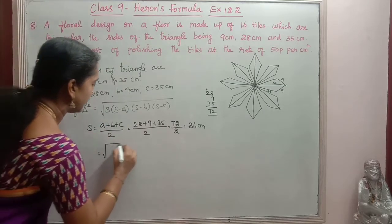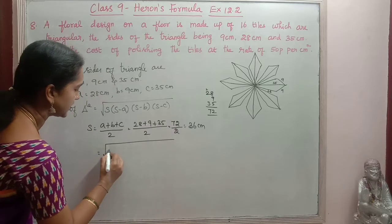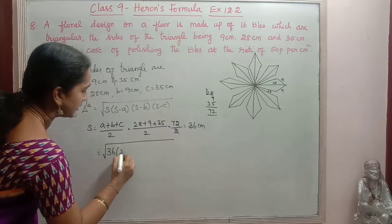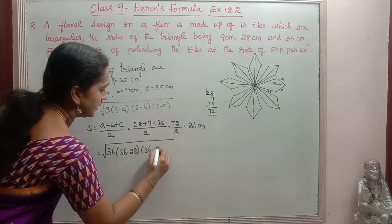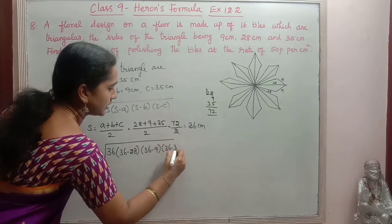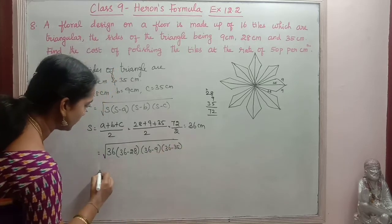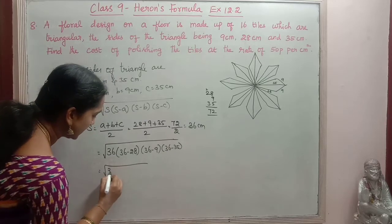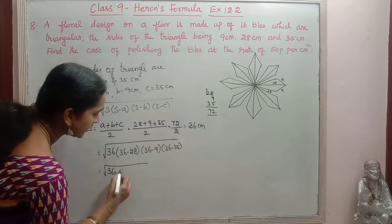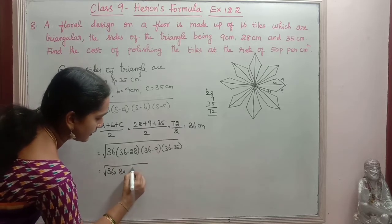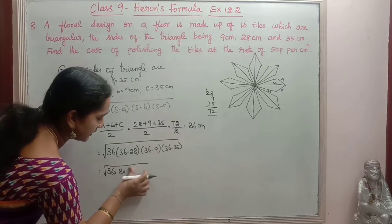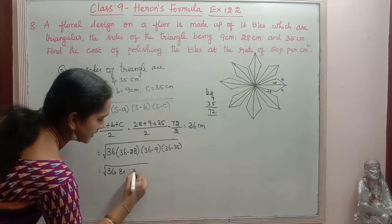So now we will substitute that in the formula. So root of s is 36, 36 minus 28, 36 minus 9 and 36 minus 35. So now if we simplify this, 36 into 36 minus 28 is 8, 36 minus 9 is 9 plus 7, 16.